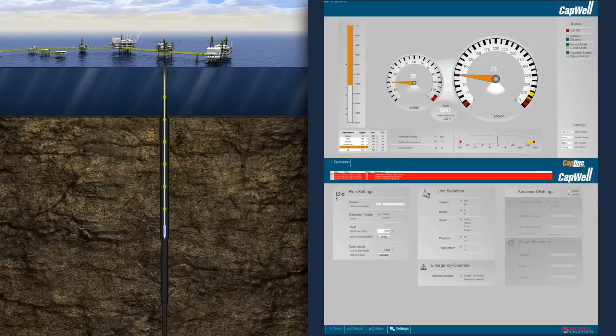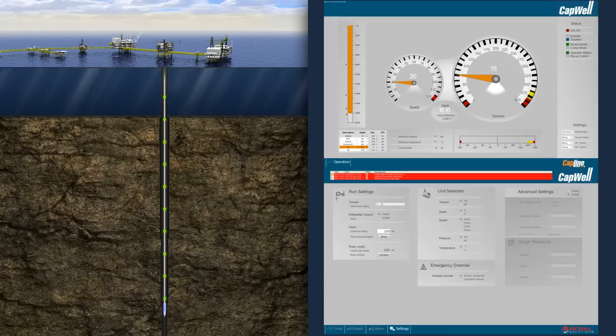In this example, the well has failed to come back to full production after a shut-in. It is suspected that the cause might be related to the gas lift.